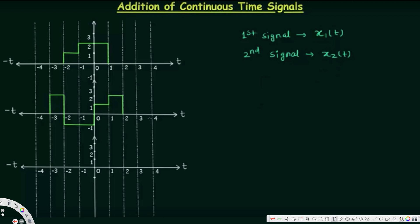In this video we are going to see how to add continuous time signals. Here we have two continuous time signals: the first signal is called x1(t) and the second one is x2(t). We are going to add these two together and call the new one x3(t). So x3(t) is going to be equal to x1(t) plus x2(t).